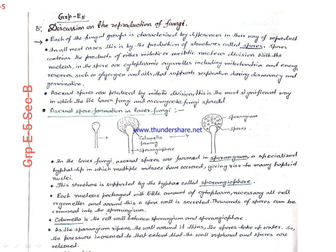Each spore contains a nucleus which is packed with a little amount of cytoplasm, all cell organelles, and around this a spore wall is secreted. As the sporangium ripens, the spores take up water and the spore wall ruptures and the spores get released. One such example is Rhizopus.